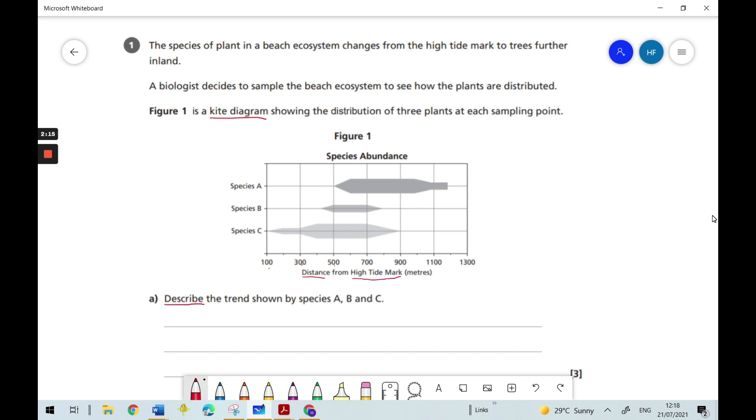So we can see by the kite diagram that species A is actually, in terms of the distance, much further from the high tide mark compared to species B and C. Because we can see that that ranges from 500 meters up to over 1,100 meters over here. So we could say that species A is further from the high tide mark, whereas species C is closer to the high tide mark and species B is in between the two.